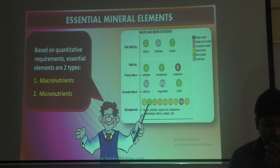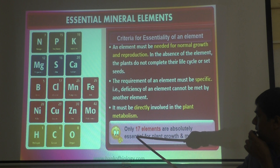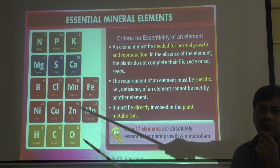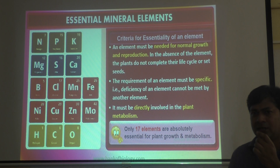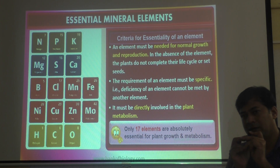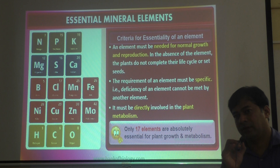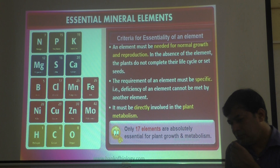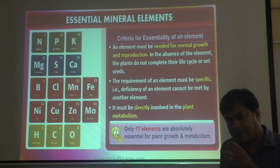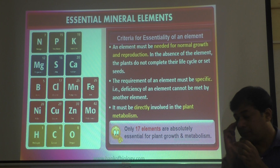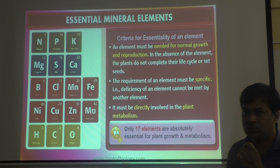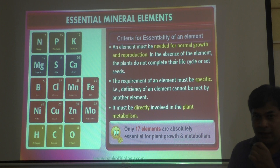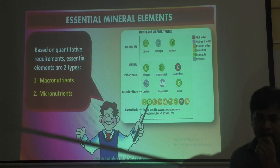What we learnt in our last class: how many elements are essential for plants? Seventeen elements are required for all the plants. Every plant doesn't require all seventeen, but considering all plants around the world together, they require seventeen elements. Mineral requirements of each plant are different, but NPK is compulsory. Out of seventeen, nine are macronutrients.